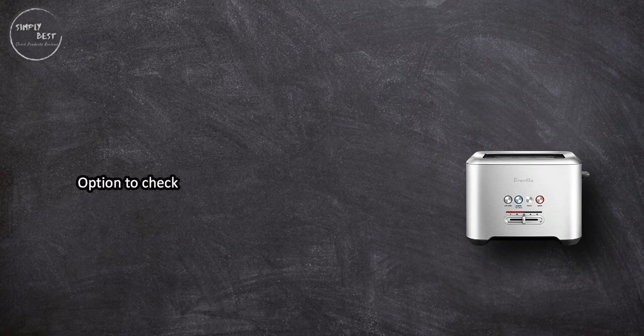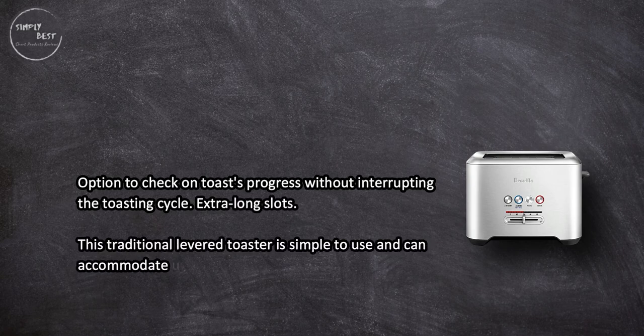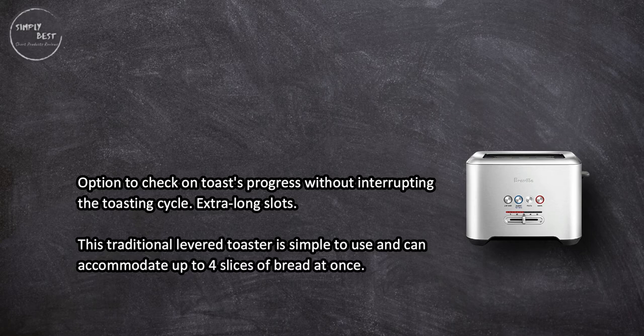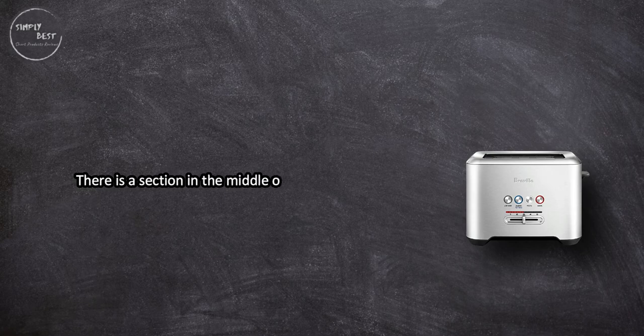Option to check on toast's progress without interrupting the toasting cycle, extra long slots. This traditional levered toaster is simple to use and can accommodate up to four slices of bread at once. There is a section in the middle of each slot that doesn't have any heating element.